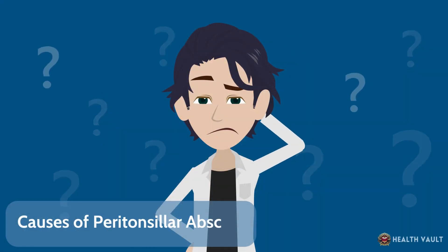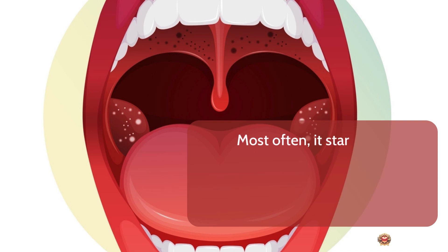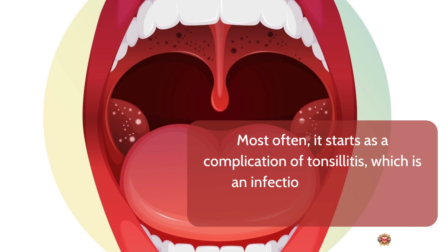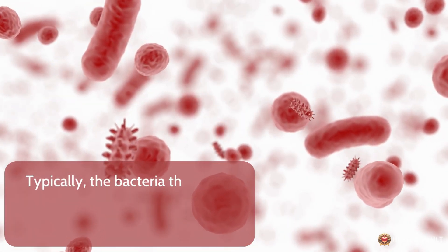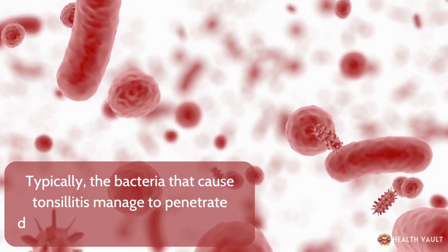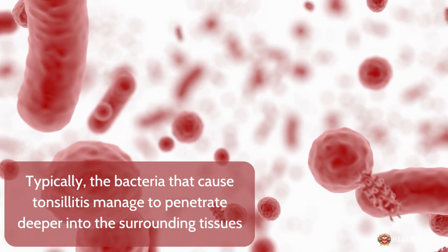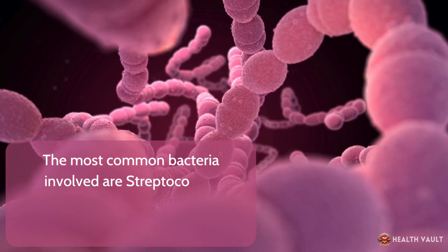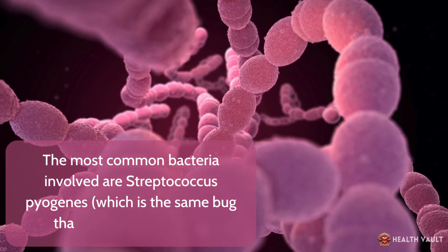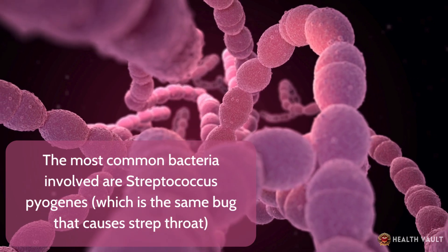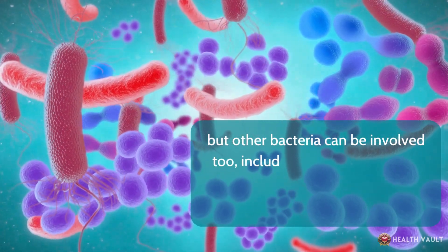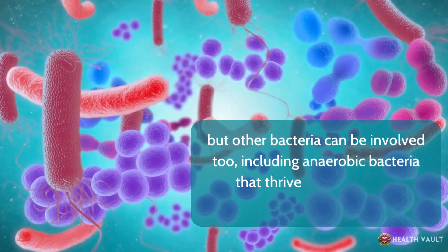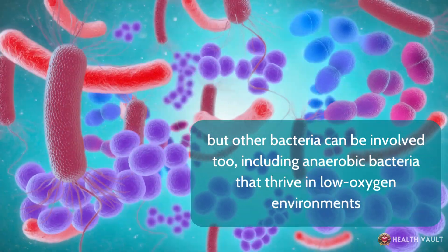Causes of peritonsillar abscesses: most often it starts as a complication of tonsillitis, which is an infection of the tonsils themselves. Typically, the bacteria that cause tonsillitis manage to penetrate deeper into the surrounding tissues, leading to the formation of an abscess. The most common bacteria involved is Streptococcus pyogenes, which is the same bug that causes strep throat, but other bacteria can be involved too, including anaerobic bacteria that thrive in low-oxygen environments.